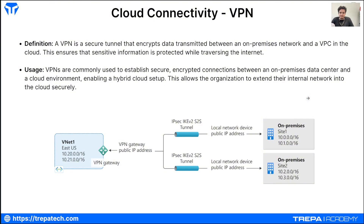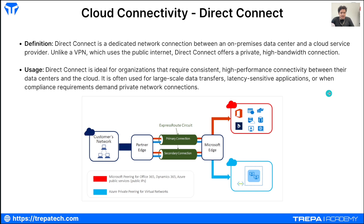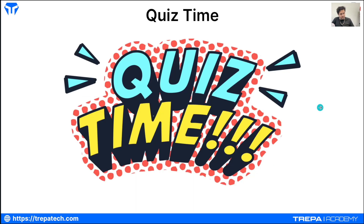Finally, let's talk about cloud connectivity — how we connect to the cloud. The Network+ exam describes two main ways: VPNs and Direct Connect. With VPNs, you can build an IPsec tunnel directly from your on-prem network to a VNet or VPC in the cloud. Direct Connect is a dedicated private network connection between your on-prem data center and a cloud service provider, bypassing the public internet — like a traditional closed-off circuit.